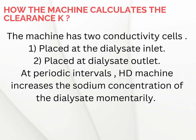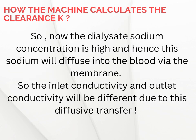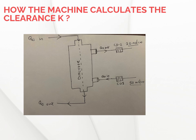This clever trick lets the machine estimate urea clearance in real time. For example, if the inlet conductivity cell measures sodium as 50 and the outlet conductivity cell measures sodium as 20 — you can see this in the picture — approximately 30 units of sodium must have diffused from the dialysate to the blood. Since sodium and urea have the same diffusive properties, 30 units of urea must have diffused from blood to dialysate. You just estimated the urea clearance rate — it's relatively very simple.